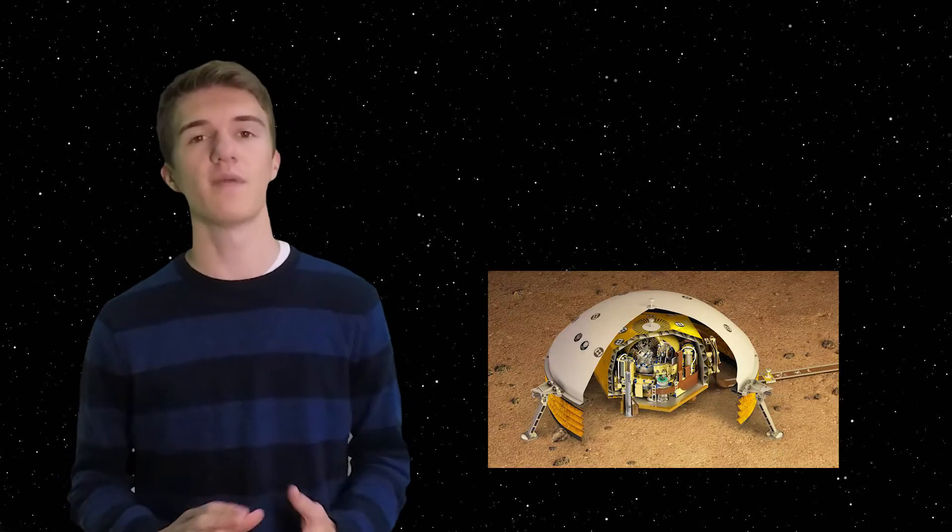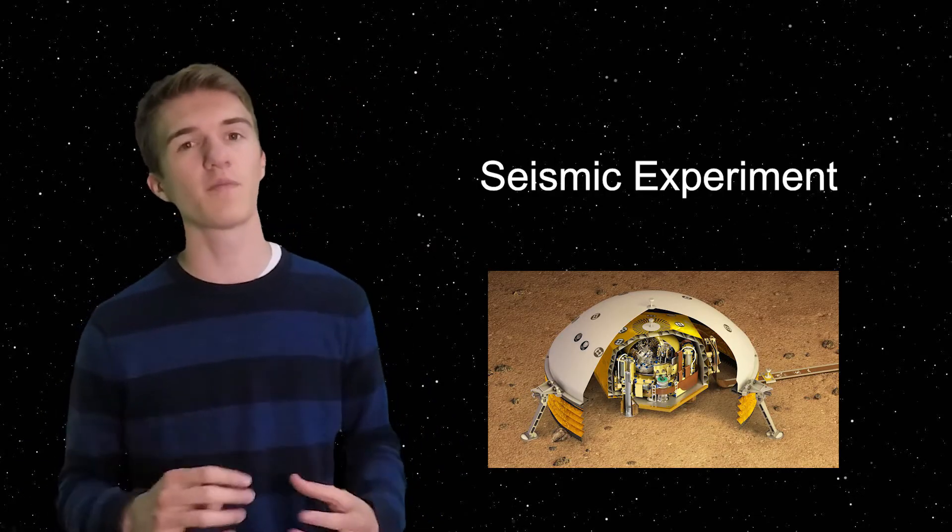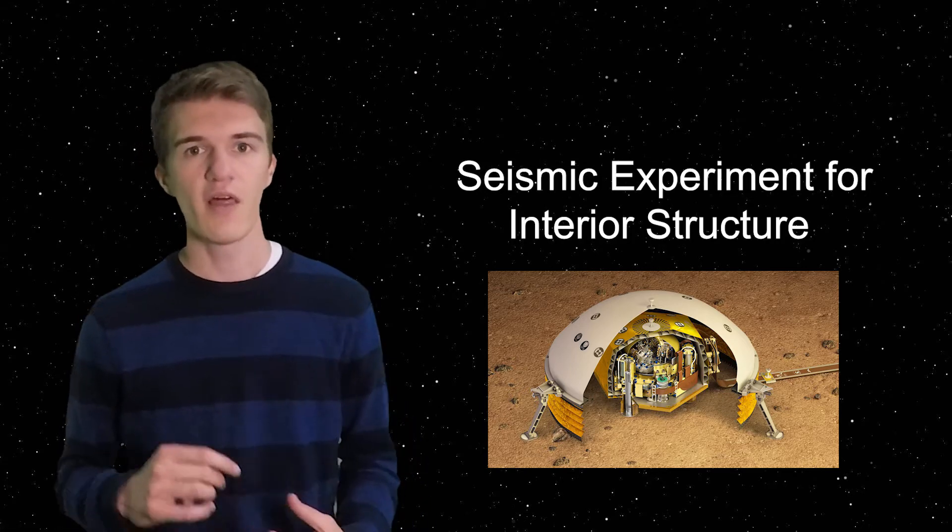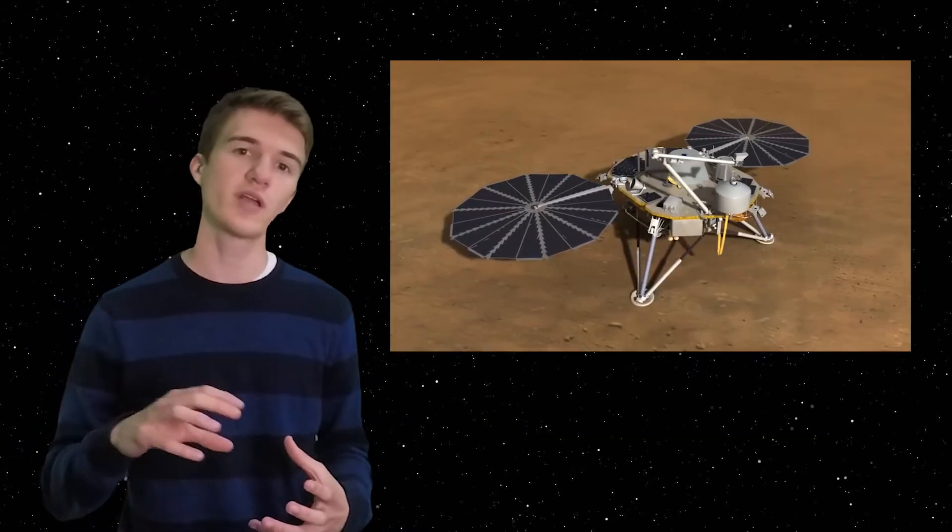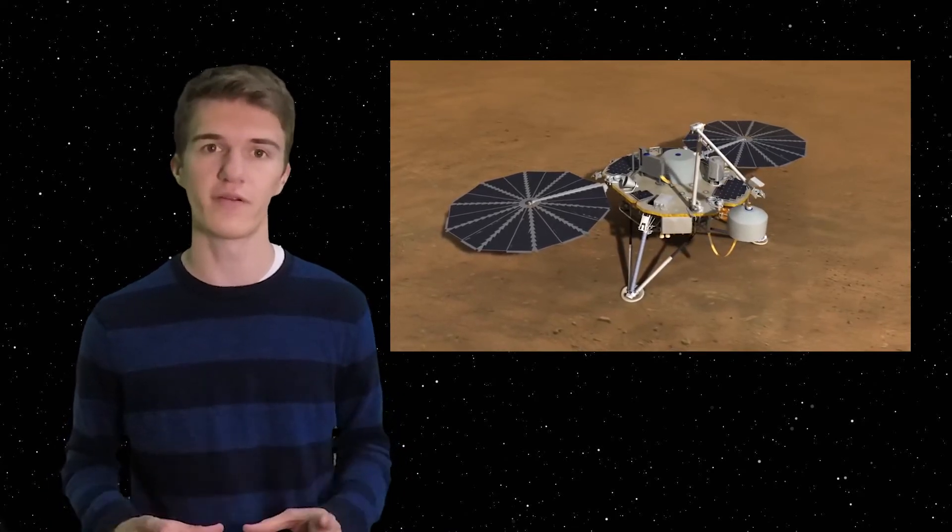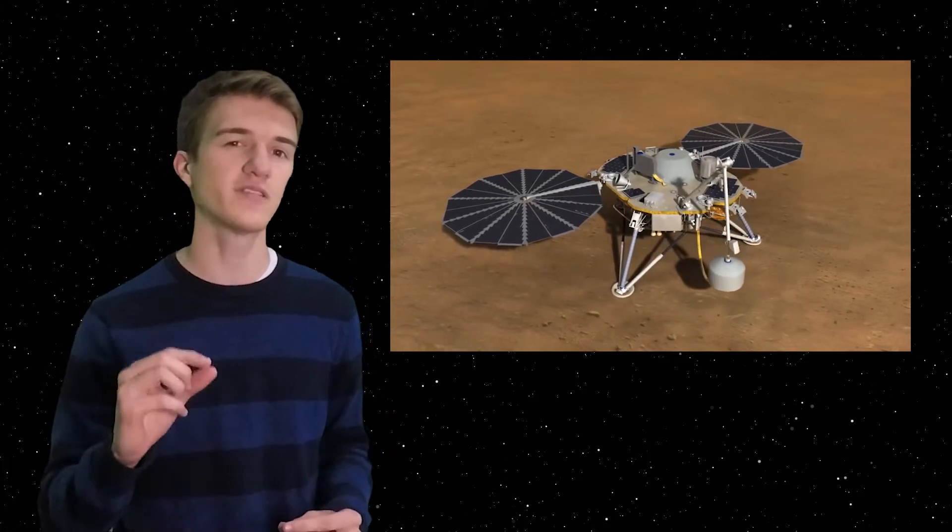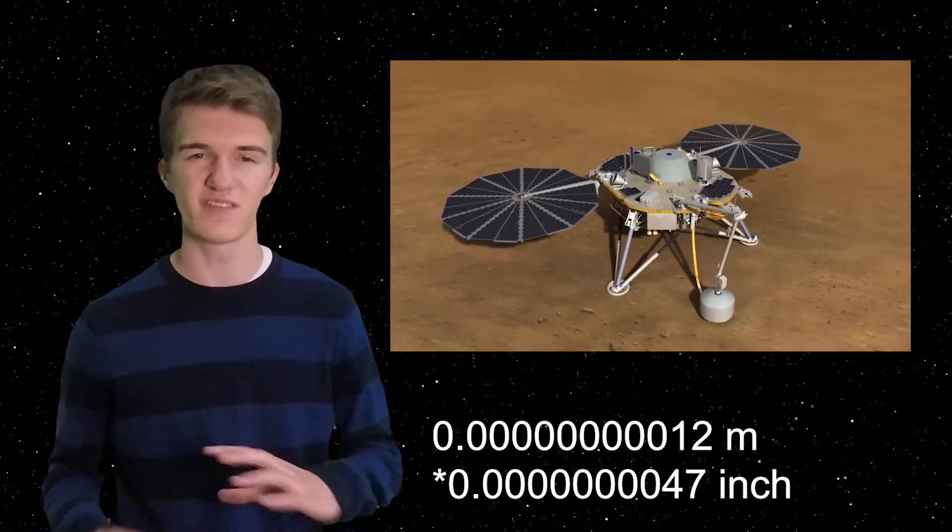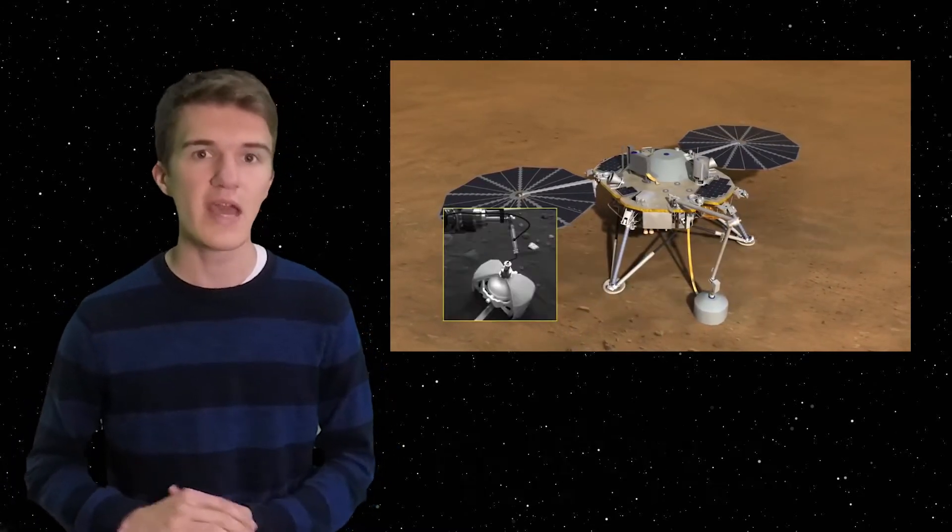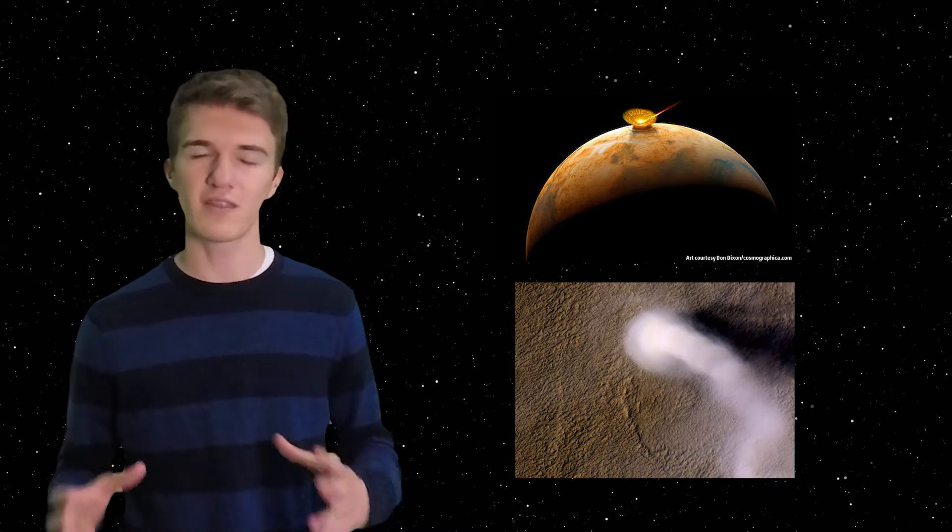So first off, the seismometer. The seismometer, also called SEIS, stands for the Seismic Experiment for Interior Structure. This setup is actually going to be taken off the lander and placed directly on the surface of Mars, separate from the lander itself. It's so precise that it can measure all the way down to the difference of a hydrogen atom in terms of seismic activity on the planet. It will also be able to measure meteor strikes and how atmospheric effects such as dust devils and dust storms will affect the planet as a whole.